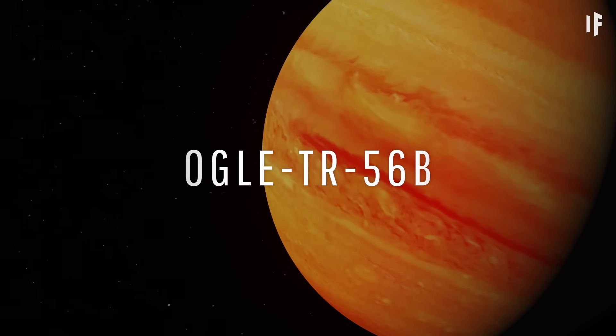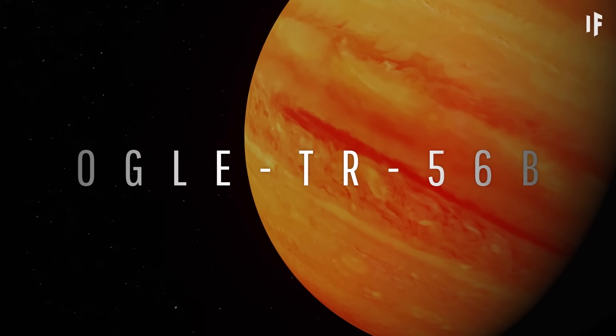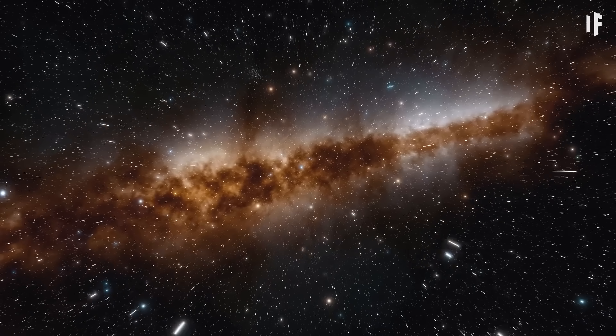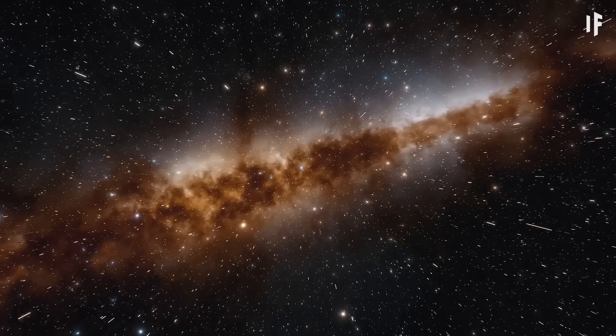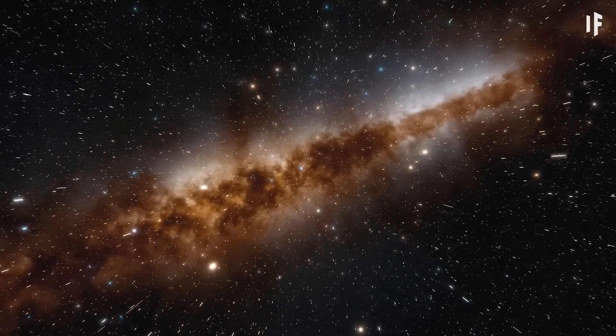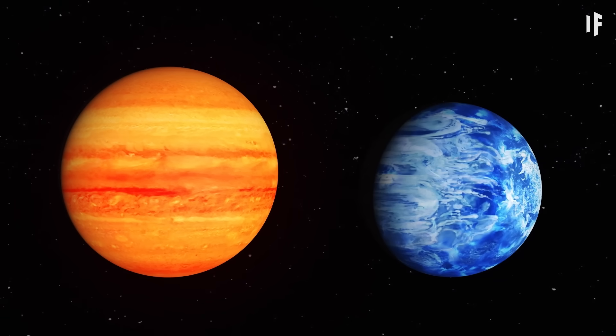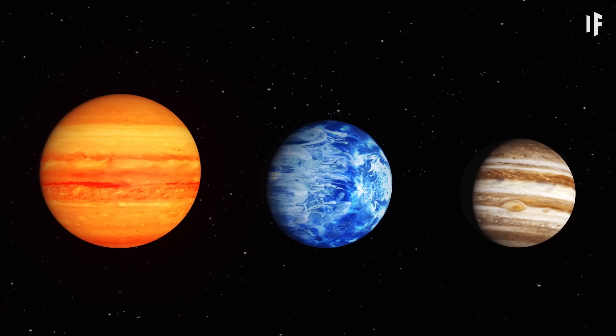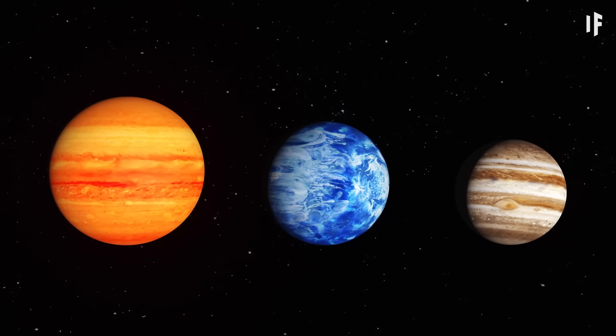Check out OGLE TR56 b. This gas giant sits in a galaxy nearly 100 light-years away from Earth. It's even larger than HD. Its mass is nearly 1.4 times as much as Jupiter's.